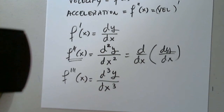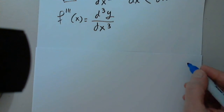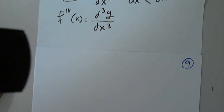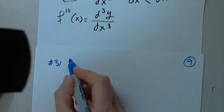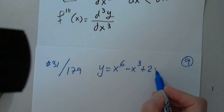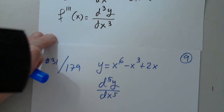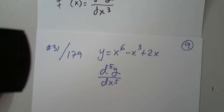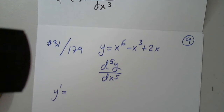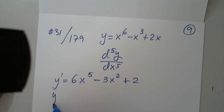On page 179, let's practice — everything is the same, we're just differentiating the same function more than once with the same rules. For example, problem 31 on page 179: y equals x to the sixth minus x to the third plus 2x. They want us to find d⁵y over dx⁵. So let's find y prime — can anyone give us y prime? Would it be 6x to the fifth minus 3x squared plus 2? Brilliant.